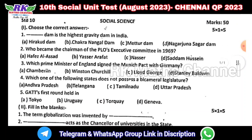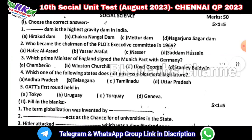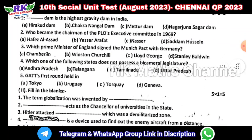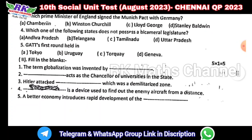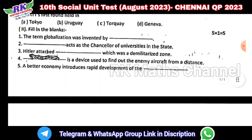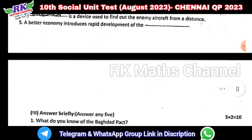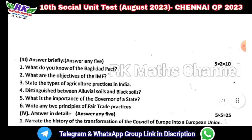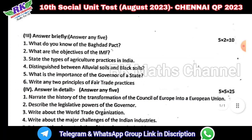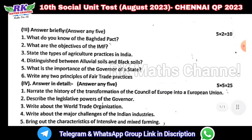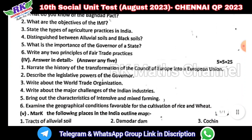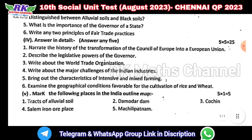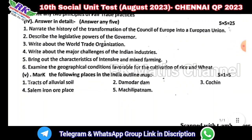So first, fill in the blanks — 5 questions, 1 mark each, that is 5 marks. Answer briefly — 5 questions, 2 marks each, that is 10 marks. Then 5 questions of 5 marks each, totaling 25 marks.